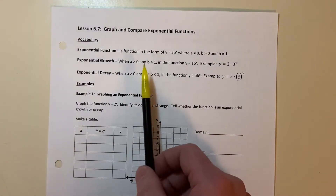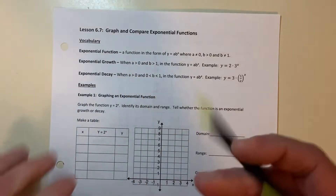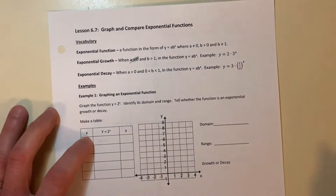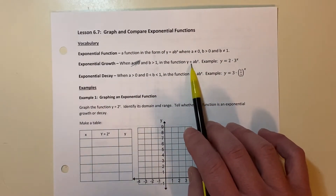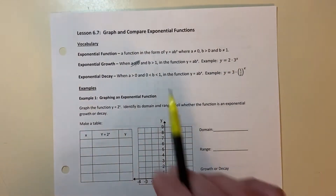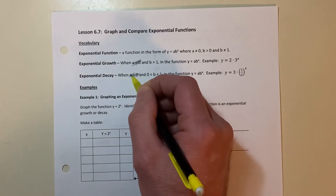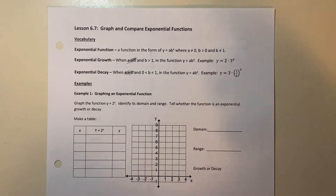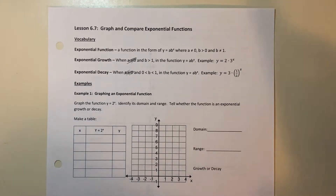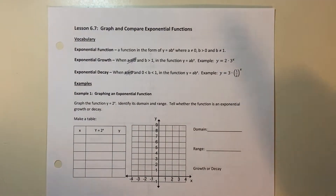To be exponential growth, the book says a has to be greater than zero — that's not actually true, I would like for you to mark that out. The b value: if b is greater than one, then it's exponential growth. For exponential decay, the a doesn't matter — it could be negative. The b is going to be a decimal or fraction between zero and one, which is repeated multiplication by a fraction, making things smaller. That's why it's called decay. Bigger than one is growth; between zero and one is decay.